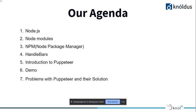Let's move to our agenda. Today we will first cover some basic topics — Node.js, node modules, and npm — with a brief description. Then we will see what Handlebars is, since I will be using it in the live demo. Then I'll give an introduction to Puppeteer — what it is, its uses, and how we can create a PDF with it. Then the demo, followed by problems I faced while implementing this feature and possible solutions.